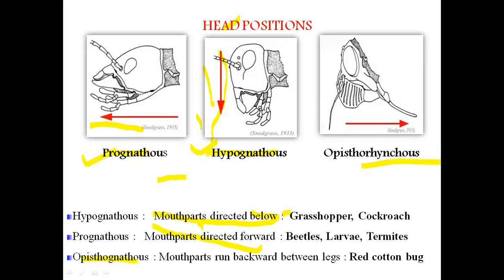Opistognathus means the head is reflexed ventrally, in between the frontal legs of the insect body. The mouth parts run backward between the legs, specifically between the coxae. Examples of opistognathus-type insects include red cotton bugs and other plant-sucking insects.